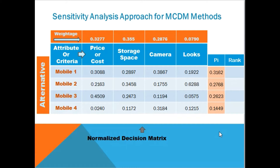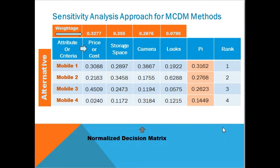We can find all other PI values and then rank the alternatives based on those PI values — higher the PI value, the better the rank. Here we can see that 0.3162 is the highest value, so this alternative will be ranked 1. Now let's dive into sensitivity analysis.